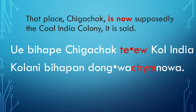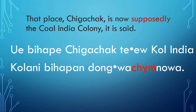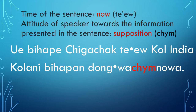So why is the meaningful part Chm used in this sentence? What does it mean? The meaningful part Chm in the word Dungacham means supposedly. That place Chigachak is now supposedly the Khol India colony. The time the speaker is talking about is now — this is the present, not the past. The attitude of the speaker about the information is that it is a supposition; the information is supposedly true. That is why the speaker uses the meaningful part Chm.